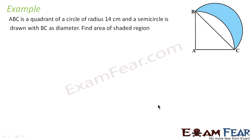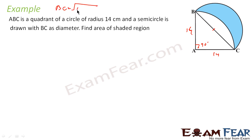Let's take one more question — we have to think a little bit here. ABC is a quadrant of a circle with radius 14 centimeters. So AB is 14 and AC is 14, with a 90-degree angle. A semicircle is drawn with BC as diameter. We have to find the area of the shaded region. Finding the area of the sector is easy since we have the angle and radius. We can also find BC. BC equals root of AB² + AC² = root of 14² + 14² = 14 root 2. So BC is 14 root 2, meaning OB and OC are each 7 root 2.